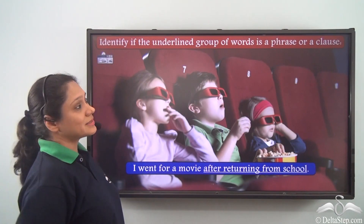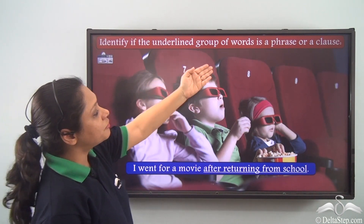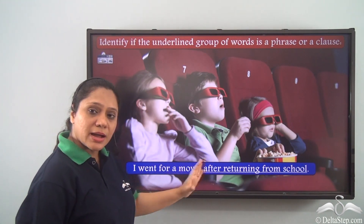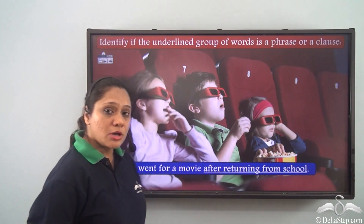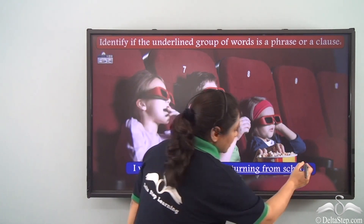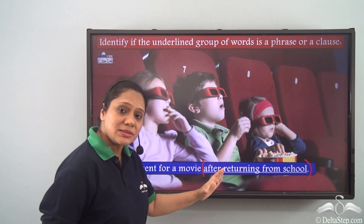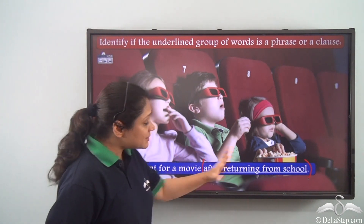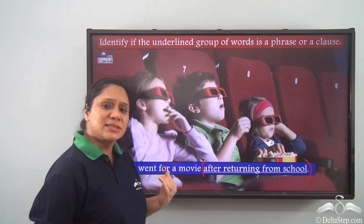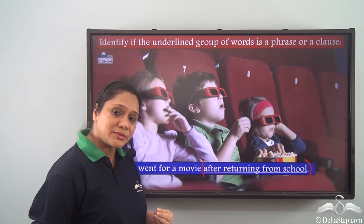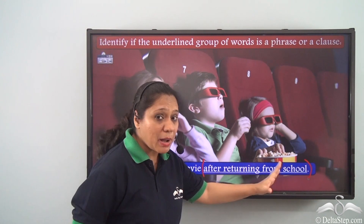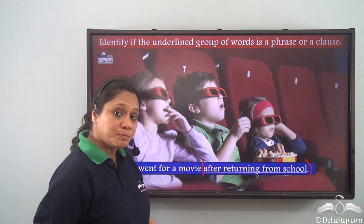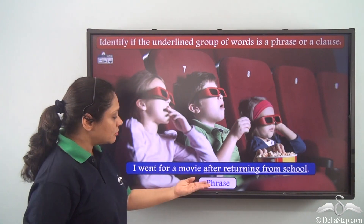Now let us do this exercise: identify if the underlined group of words is a phrase or a clause. The sentence is: I went for a movie after returning from school. The underlined part is after returning from school. In this part, we cannot identify any subject doing a verb. It is conveying only some sense, and this group of words is acting as an adverb telling us about the time. Hence after returning from school is a phrase.